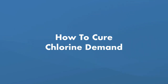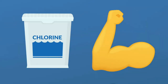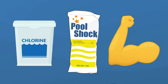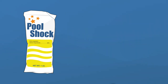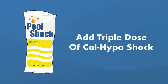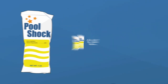Here's how to cure chlorine demand. Because chlorine demand means the chlorine in your water is being consumed faster than it can be added, you'll need to super chlorinate your water, and the best way to do that is by shocking your pool. Before you shock your pool, make sure that you test and adjust your alkalinity and pH levels.